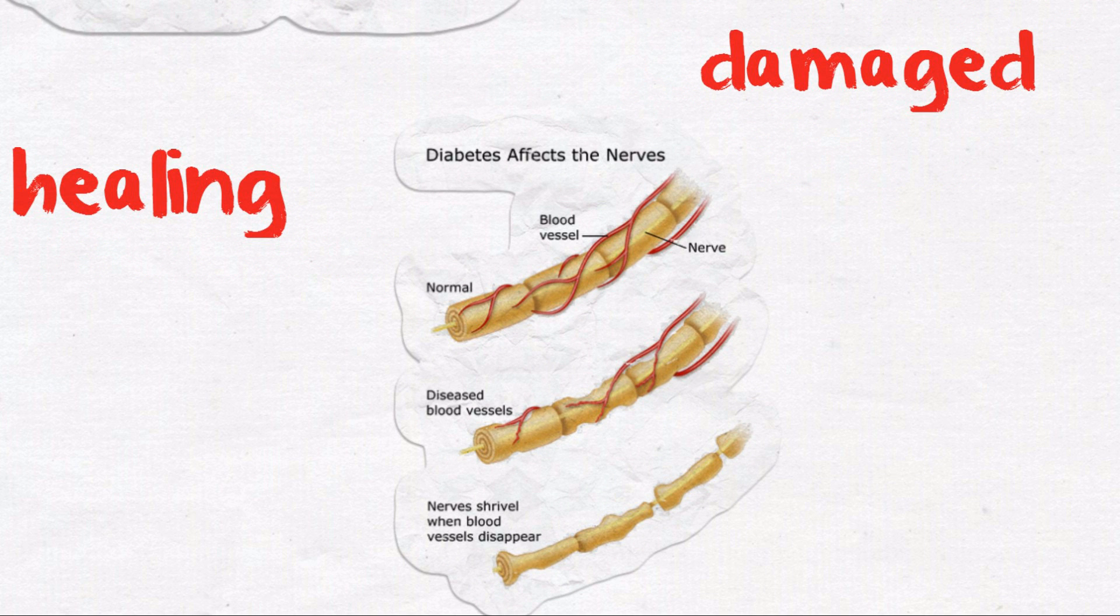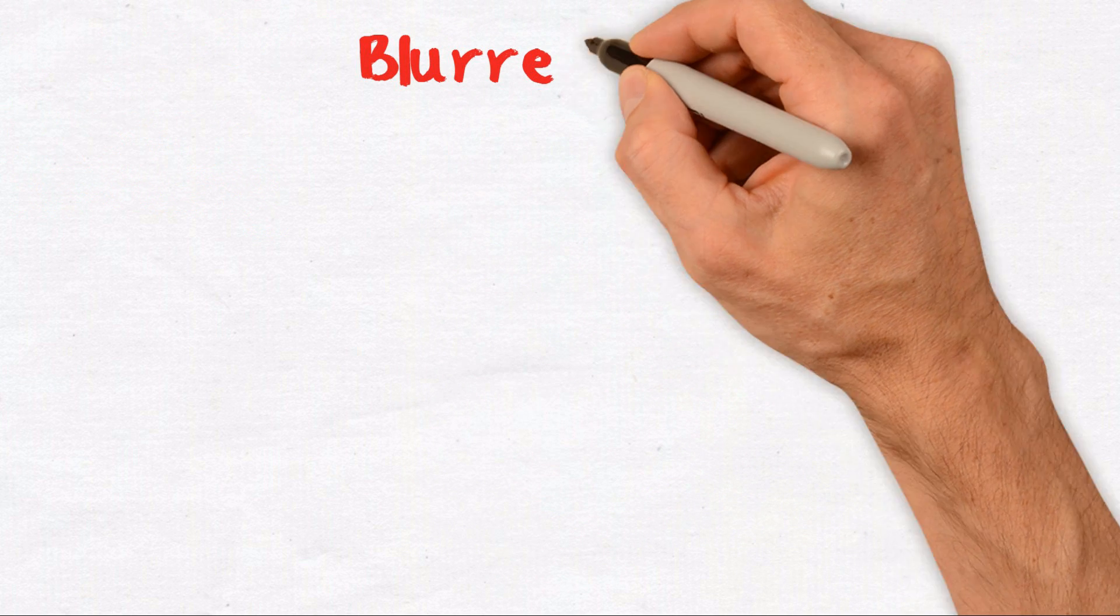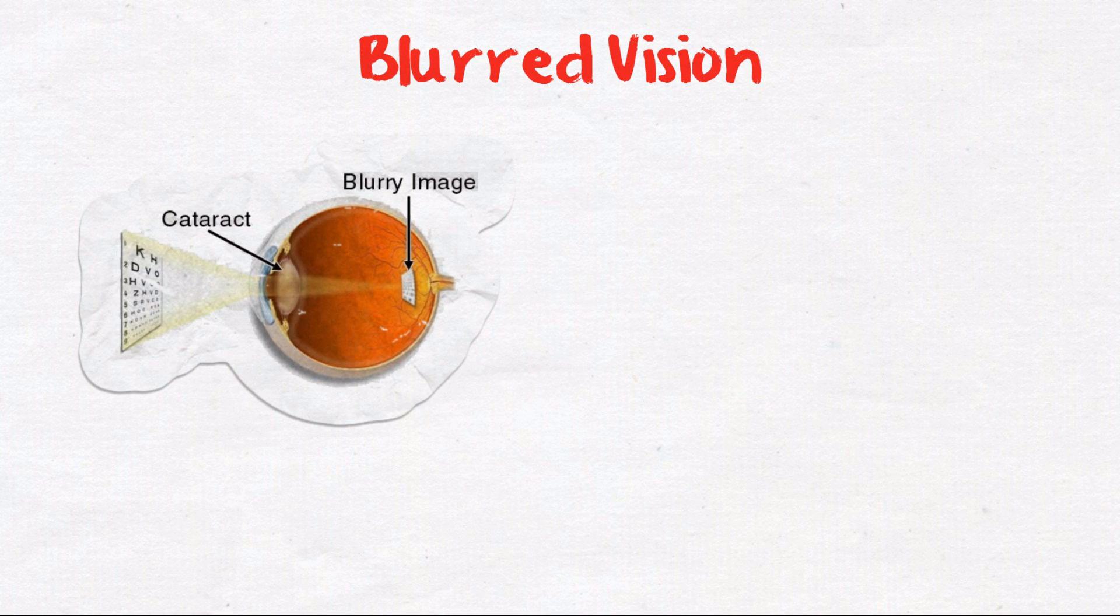Blurred vision: The lens of the eye is a flexible membrane suspended by muscles which change the shape of the lens to focus the eye. In a high sugar environment, such as uncontrolled type 2 diabetes, the lens's ability to bend is altered. Although the lens is not damaged, the muscles have to work harder to focus.